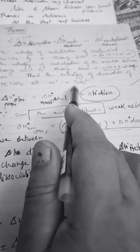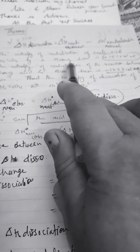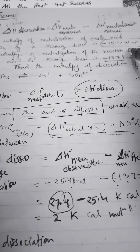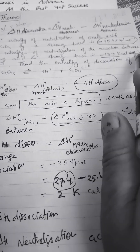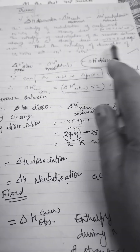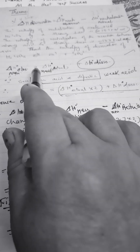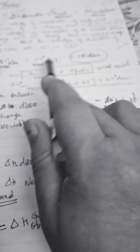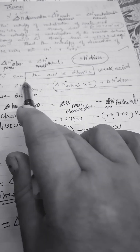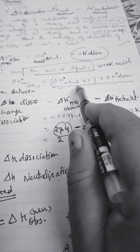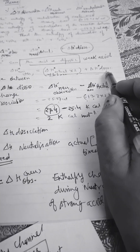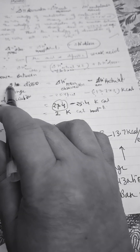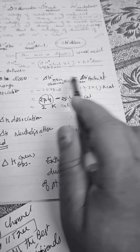The enthalpy of neutralization of oxalic acid with a strong base is minus 25.4 kcal, and the enthalpy of neutralization between a strong acid and strong base is minus 13.7 kilocalorie per equivalent. We need to find the enthalpy of dissociation. Since oxalic acid is diprotic, delta H observed equals delta H neutralization actual multiplied by 2, which is minus 13.7 times 2, plus delta H dissociation.